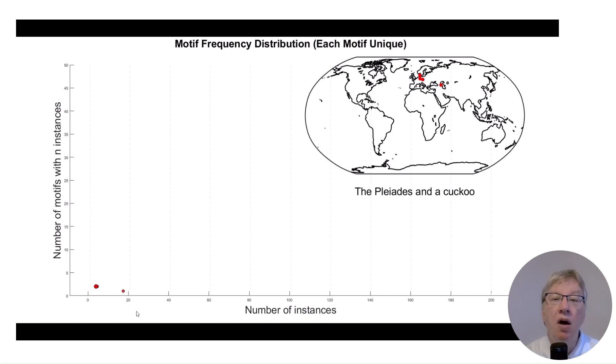Let's explain how we process the data with a sketch and then I will show you the real data. The top right insert shows a world map and each red point corresponds to one instance in which one motif, here we have chosen the Pleiades and the cuckoo, was recorded.